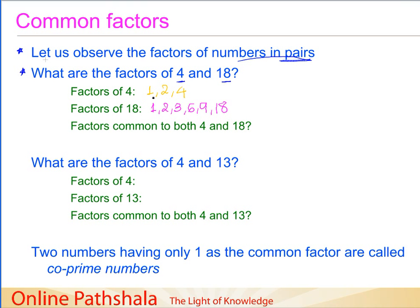What we have to do is just observe the factors of both of these numbers, that is 4 and 18, and see if there are any factors common to both. Let us try to circle the factors that are common. I will take a green color. I see 1 is present as a factor of 4, and it is also present in 18. And then we also have 2.